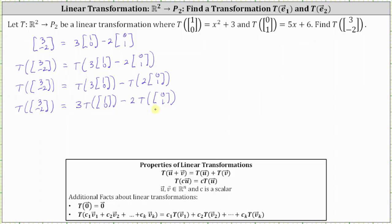So now we'll perform substitution on the right. The transformation of the vector (3, negative 2) is equal to three times the transformation of the vector (1, 0), which equals x squared plus 3 — so we have three times (x squared plus 3) — minus two times the transformation of the vector (0, 1), which equals 5x plus 6, so we have two times (5x plus 6).